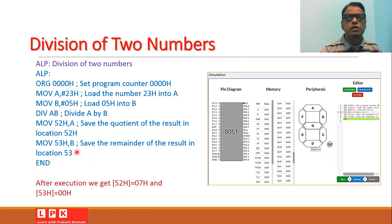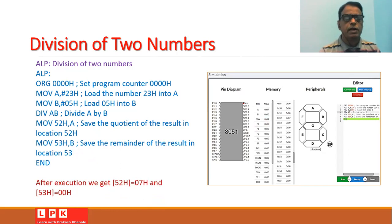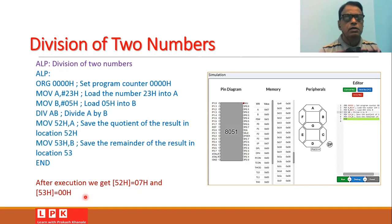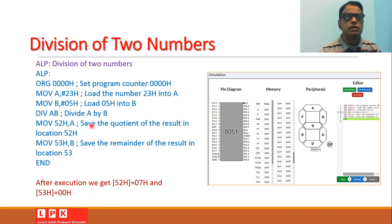When you type and execute this program, you will observe that location 52h equals 07h and location 53h equals 00h. When you divide 23h hexadecimal by 05h hexadecimal, you get 07h because 23 hexadecimal is equal to 35 decimal.